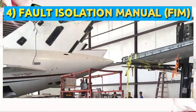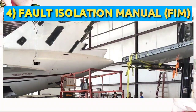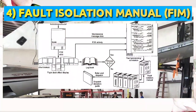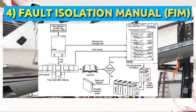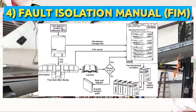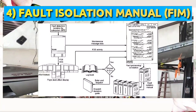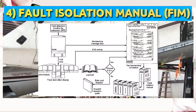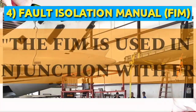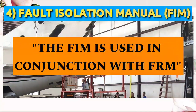Number 4: Fault Isolation Manual, or FIM. The FIM contains a set of fault isolation trees for the purpose of pinpointing and fixing numerous problems related to various systems and components on the aircraft. These flow diagrams are designed to locate many problems within various systems. The FIM is sometimes used in conjunction with the FRM.